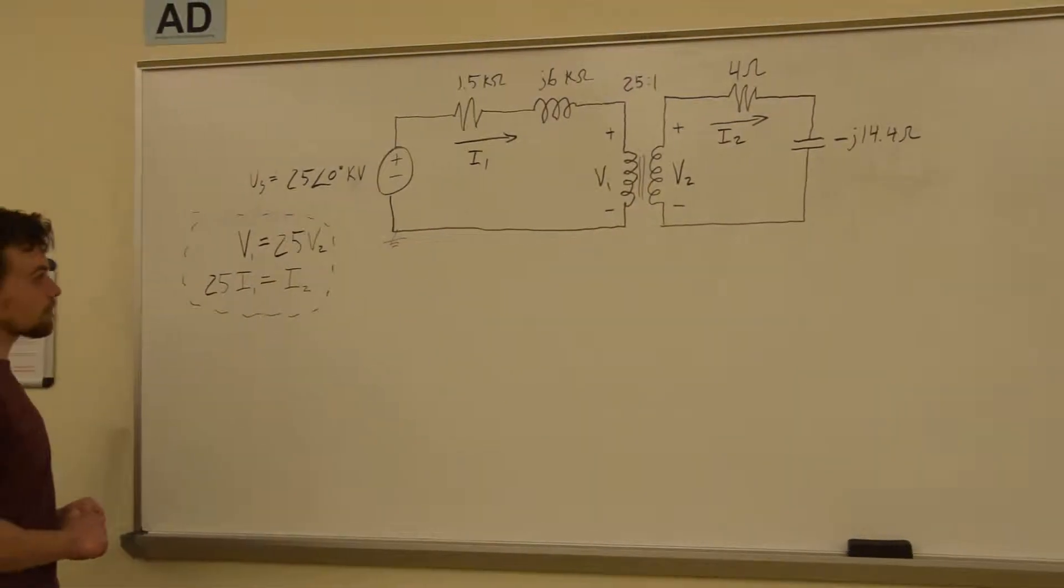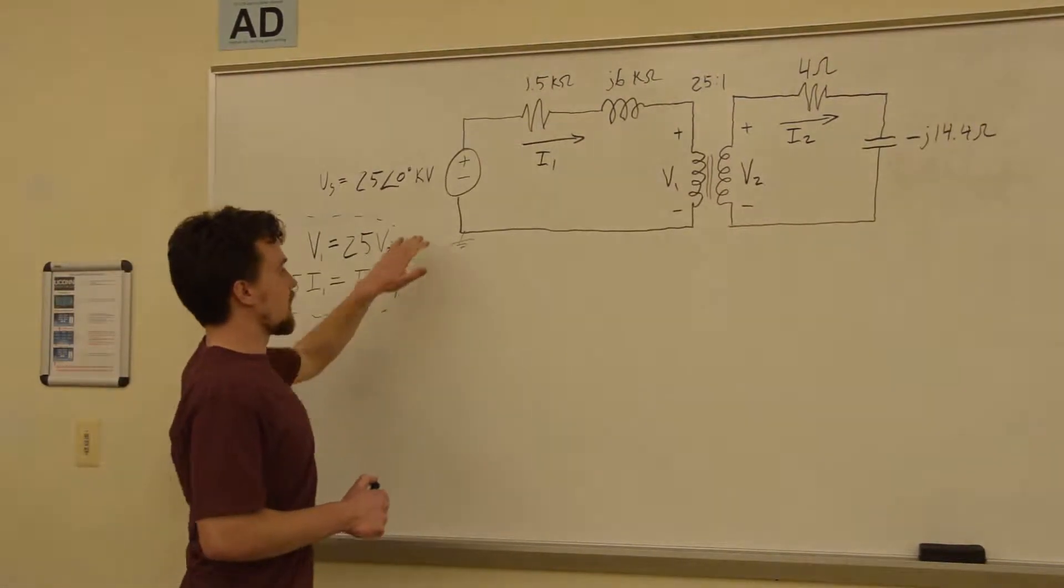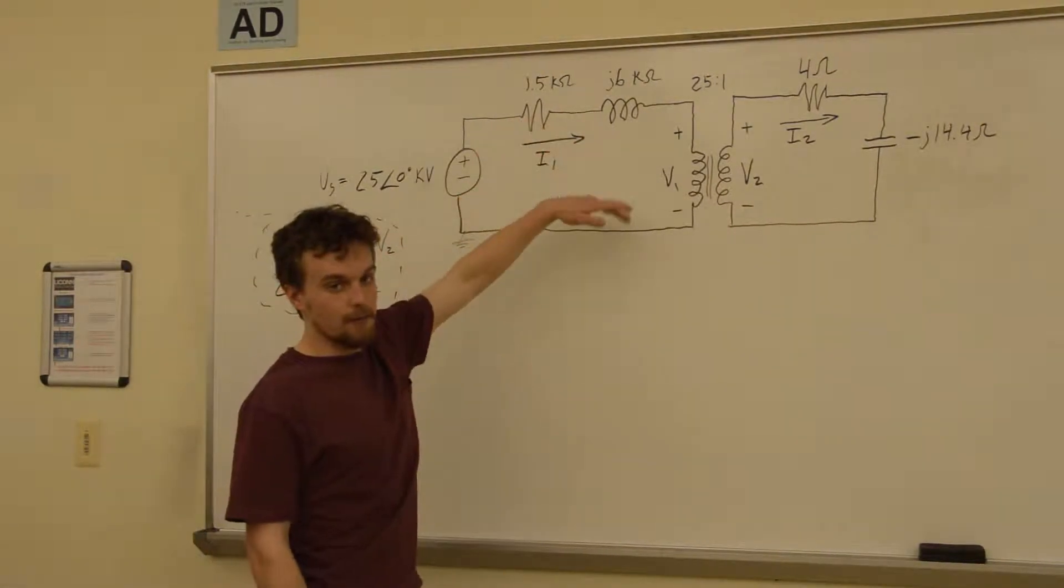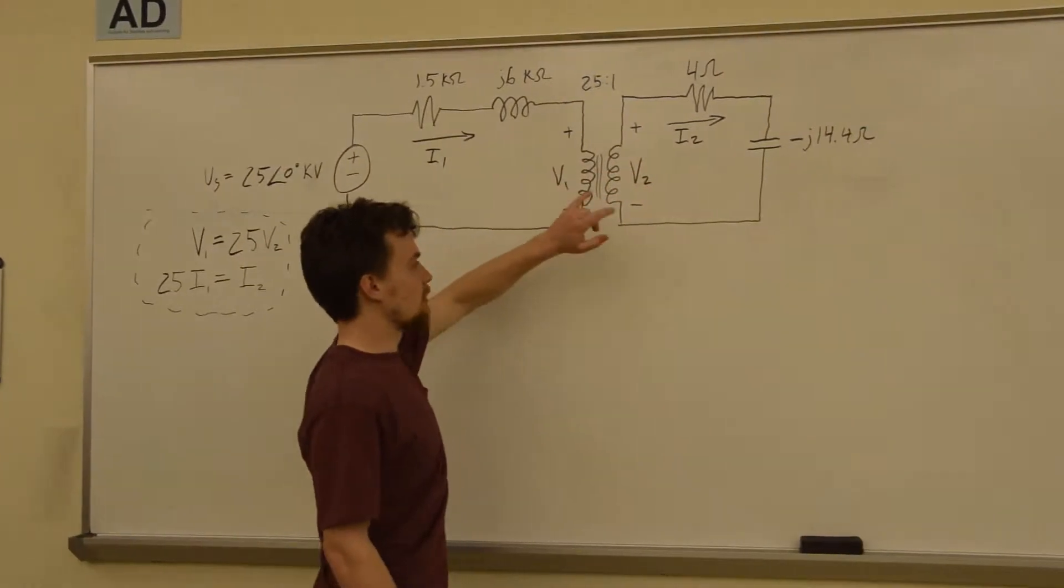Okay, so we're going to do some steady state math with this and we're going to find I1, I2, V1, and V2.